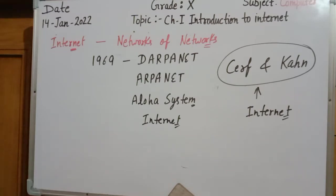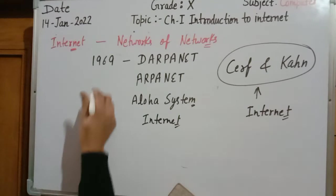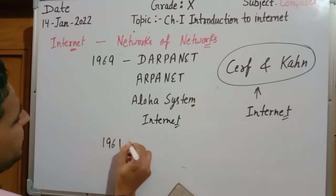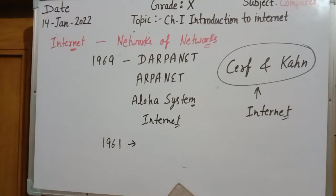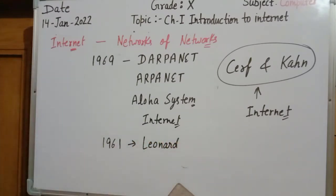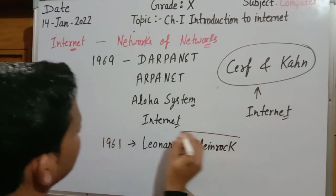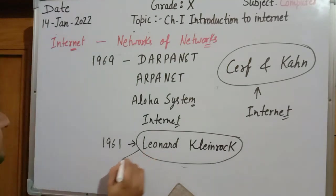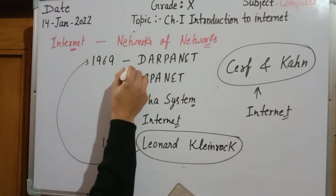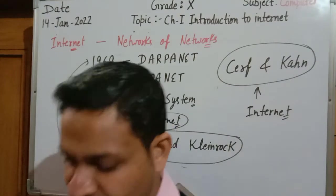The initial idea for internet came to market in 1961. This idea was developed by Leonard Kleinrock, who thought about sharing information using a network system. This idea then started developing in 1969 and day by day it got developed until it finally became the internet. This is the history of internet technology.